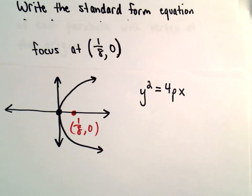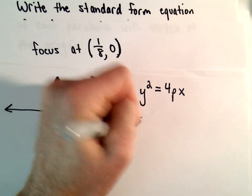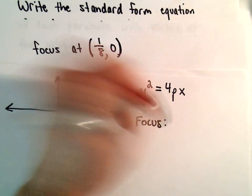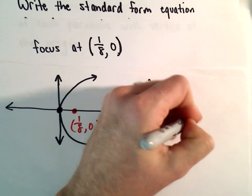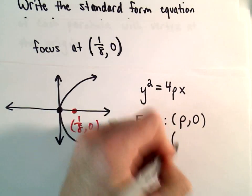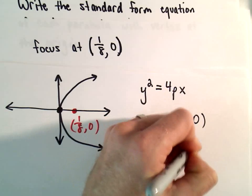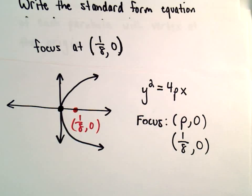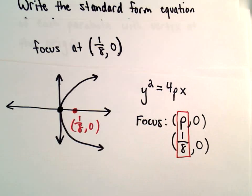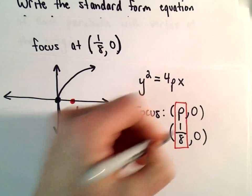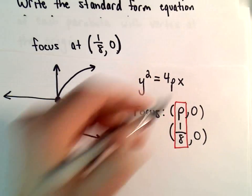Recall that our focus is going to be of the form p comma zero, but we know what our focus is, it's one-eighth comma zero. So we're actually already being told our value of p. We know that p in this case is going to equal one-eighth. So that's all we have to do is just substitute in the one-eighth for p.